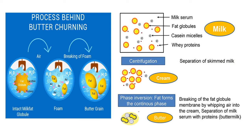In this diagram we can understand the formation of fat globules and making of butter. Normal milk shows yellow fat globules surrounded by membrane with casein protein and milk serum as the continuous phase. During cream separation, all fat globules join together and make the cream. At the bottom we see phase inversion: cream is oil-in-water emulsion whereas butter is water-in-oil. Intact milk fat globule undergoes foaming, breaking of the membrane, coalescence of fat globules, and butter grains are formed during churning.